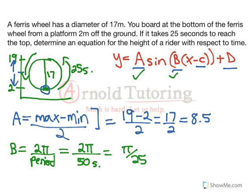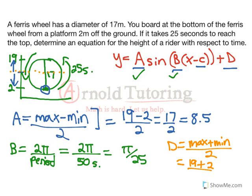Let's go to 'd', because there's a nice easy formula for it. 'd' is our vertical shift, so it's the max plus the min divided by 2 — that's just the average of the max and the min, giving us the equation of the axis. The max is 19 plus the minimum of 2, over 2 — that's 21 over 2, which is 10.5. So the wheel has been shifted up 10.5 and stretched by 8.5. We've now got all three of a, b, and d.